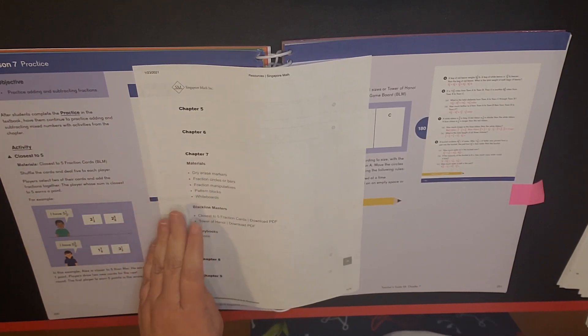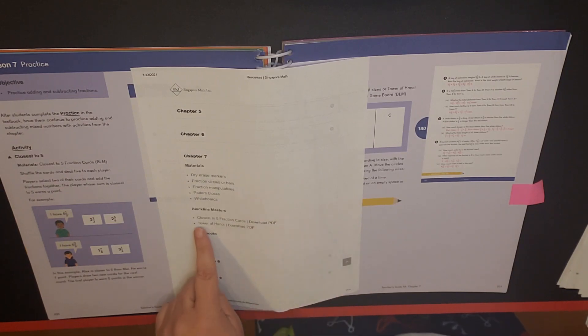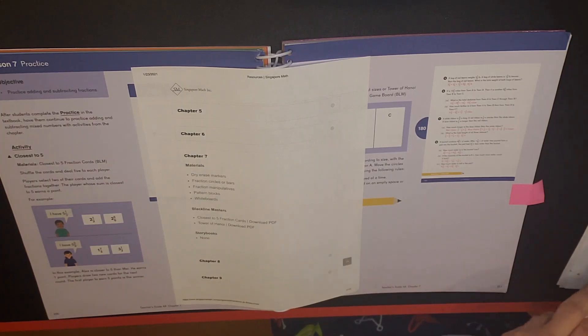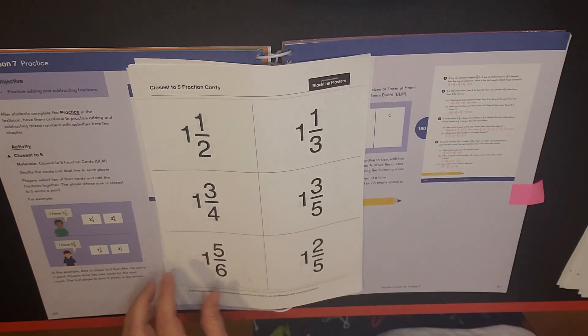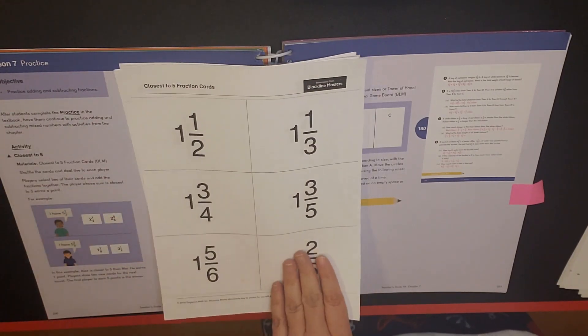I go online to Singapore.com under programs dimensions, look under 4A and then go down to chapter seven. And it tells me what materials and black line masters. And then the download PDF is a link that I click on. And so I clicked on the closest to five fraction cards and I was able to print these out.